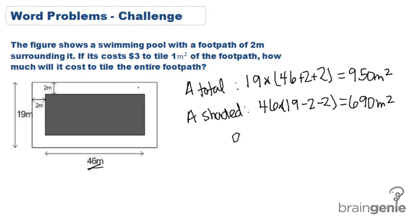Now to find the area of the footpath, we simply subtract 950 minus 690, which is going to give us 260 meters squared. Now we have the area, but we're not done yet. We need to find out how much it's going to cost. So for 260 meters squared, we know that it's going to cost $3 per meter squared for a total of $780 to tile the footpath.